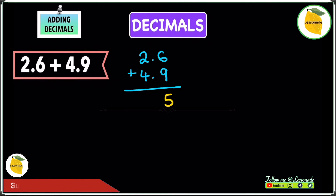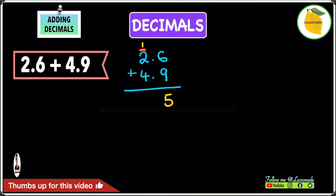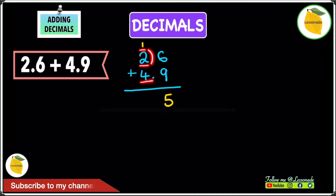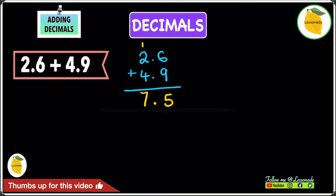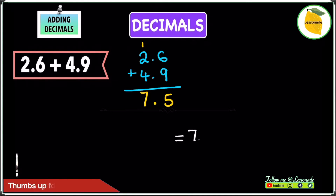So 6 plus 9 is going to be 15 — write the 5 and carry the 1. Then 1 plus 2 plus 4: 1 plus 2 is 3, and 3 plus 4 is 7. Add the decimal point and we get an answer of 7.5.